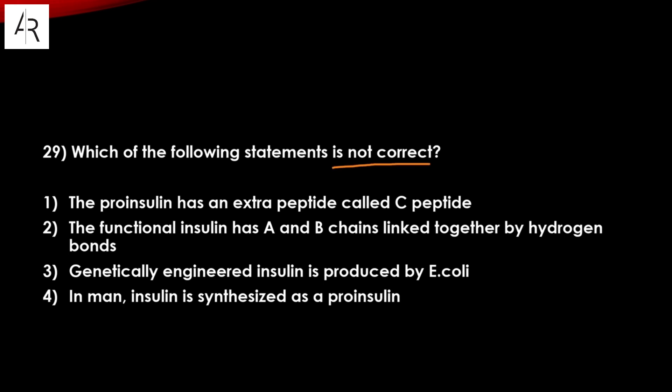Question number twenty-nine: which statement is not correct? 'Pro-insulin has an extra peptide called C-peptide' — that is correct. 'The functional insulin has A and B chains linked by hydrogen bond' — it should be disulfide linkage, not hydrogen bond. So option number two is the answer.